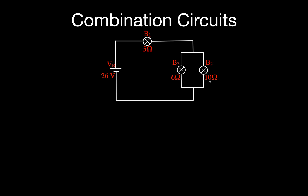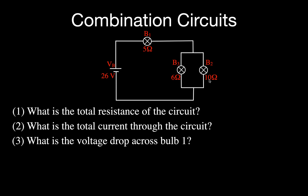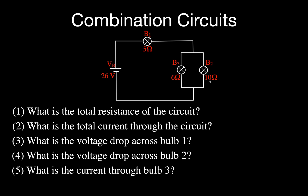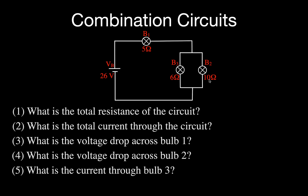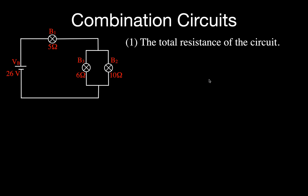We are going to answer these questions: What's the total resistance? What's the total current? What's the voltage across bulb number one? What is the voltage across bulb number two? And what is the current through bulb number three? This is a two-step process because we have to find the equivalent resistance of the two parallel resistors, and then add it to the series one.